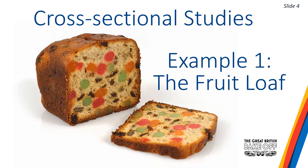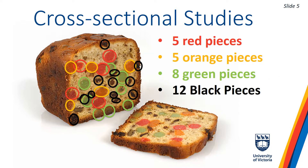As you can see on slide 5, we can estimate that about 17% of the fruit pieces in the cake are red, 17% are orange, 27% are green, and 40% are black. That is, of course, assuming that our cross-section — i.e., the slice — is representative of the rest of the loaf, or in other words, that we have a random sample. In addition to providing descriptive statistics such as prevalence, cross-sectional studies are also useful to measure the association between two observed factors.